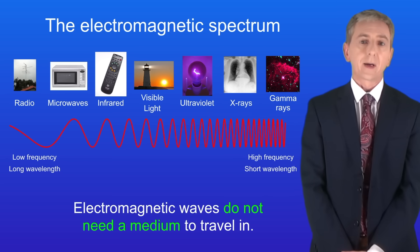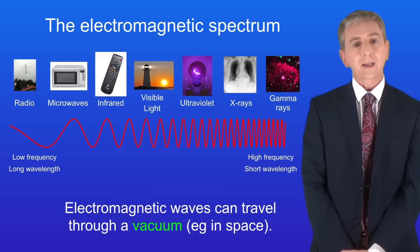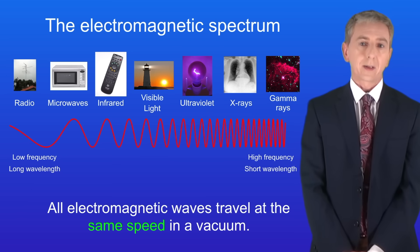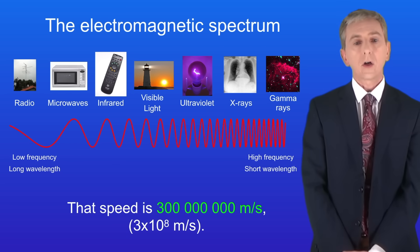Now electromagnetic waves do not need a medium to travel in. That means that electromagnetic waves can travel through a vacuum, for example in space. All electromagnetic waves travel at the same speed in a vacuum. And that speed is 300 million or 3 times 10 to the power of 8 meters per second.